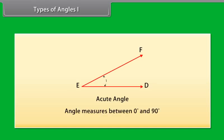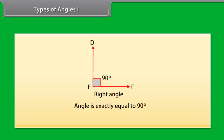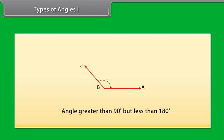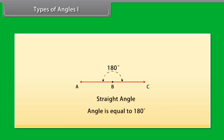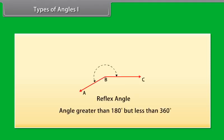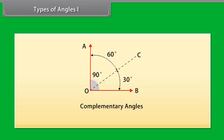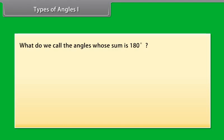An acute angle measures between zero degree and 90 degree. A right angle is exactly equal to 90 degree. And an angle greater than 90 degree but less than 180 degree is called an obtuse angle. A straight angle is equal to 180 degrees. And an angle which is greater than 180 degrees but less than 360 degrees is called a reflex angle. We also know that two angles whose sum is 90 degree are called complementary angles. Two angles whose sum is 180 degree are called supplementary angles.